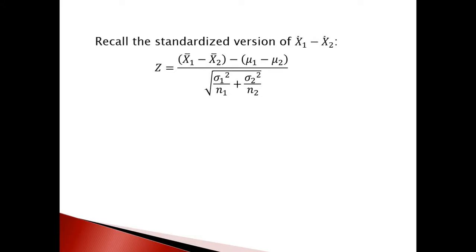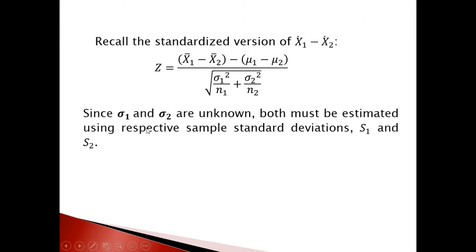Recall that the standardized version of x̄₁ minus x̄₂ is: x̄₁ minus x̄₂ minus (μ₁ minus μ₂), divided by the square root of σ₁² over n₁ plus σ₂² over n₂. Since σ₁ and σ₂ are unknown, both must be estimated using the respective sample standard deviations s₁ and s₂.